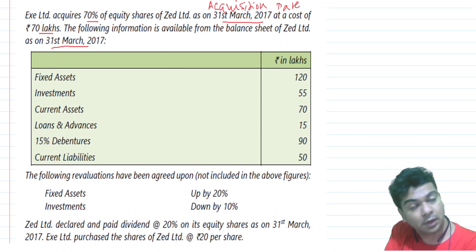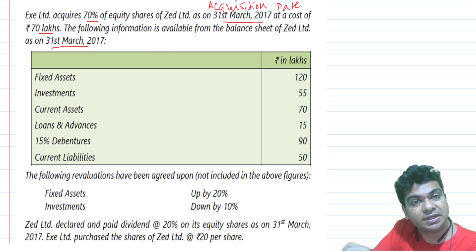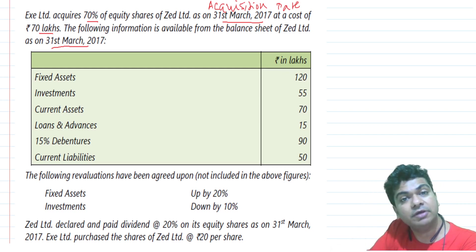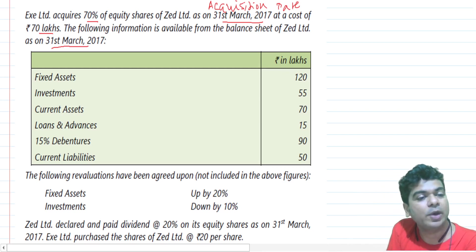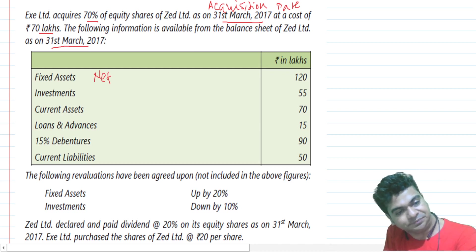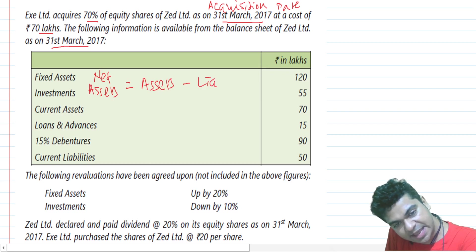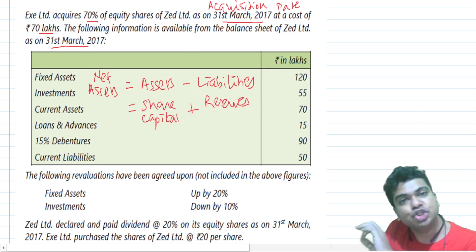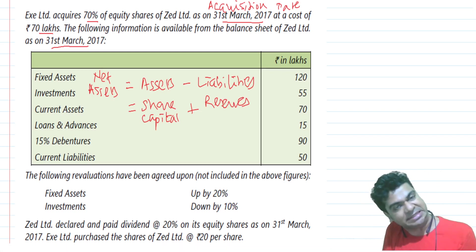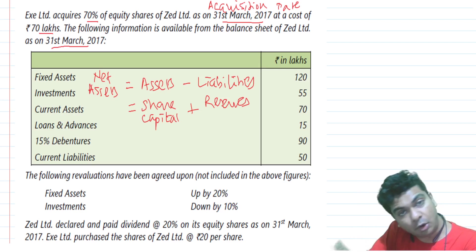In previous questions, share capital and reserves information was given, but this time they have given assets and liabilities instead. However, it doesn't make a difference if you apply the balance sheet equation: net assets equals assets minus liabilities, which equals share capital plus reserves. So we will work out net assets on the basis of the asset and liability information given, and find out the goodwill or capital reserve.